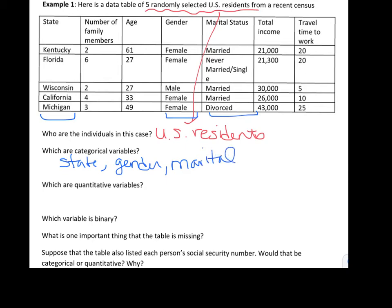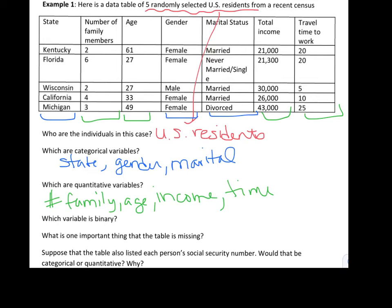Make sure there are no numbers that are actually categorical. In this case there aren't, so our quantitative variables are the ones where taking an average of all five people would give something meaningful: number of family members, age, income, and travel time — those are all quantitative. The next question is which variable is binary, and the only one here is gender, since it has exactly two categories.